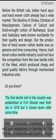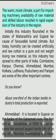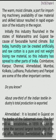The first textile mill in the country was established at Fort Gloucester near Kolkata in 1818, but it closed down after some time. The first successful mechanized textile mill was established in Mumbai in 1854. The warm, moist climate, a port for importing machinery, availability of raw material, and skilled labor resulted in rapid expansion of the industry. Initially this industry flourished in Maharashtra and Gujarat because of favorable humid climate. But today, humidity can be created artificially, and raw cotton is a pure and not weight-losing raw material, so this industry has spread to other parts of India.